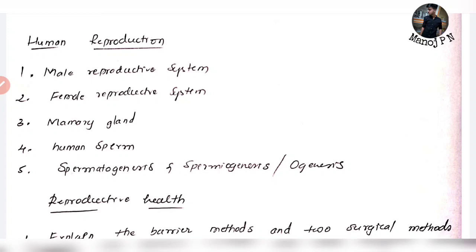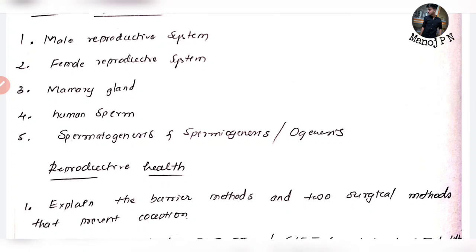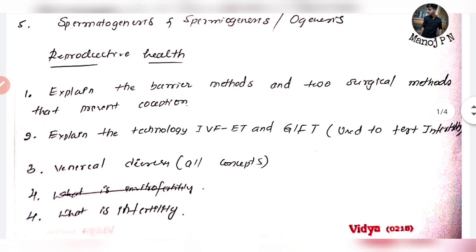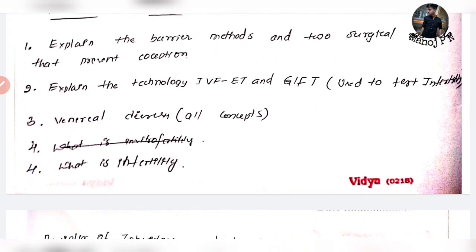The diagram is easy — if you don't know the diagram, please read it in the comment section and in the description. The mammary gland and human sperm are very easy — head, tail, body — simple. Then reproductive health: we have to use barriers and in vitro fertilization techniques. Infertility, detection, prevention, and methods of preventing conception. In general, viral diseases — please be aware of that and learn all those things.